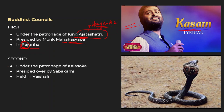The second Buddhist council was held under the patronage of Kala Asoka. As covered in the Chronology of Ancient India video, Kala Asoka belonged to the Shishunaga dynasty — first ruler was Shishunag and the second was Kala Asoka. He conducted the second Buddhist council. My code is Kala Nag because he belonged to the Naga dynasty. Kala Asoka's council was presided over by Sabha Kami and it was held in Vaishali.